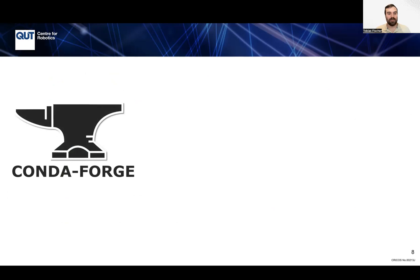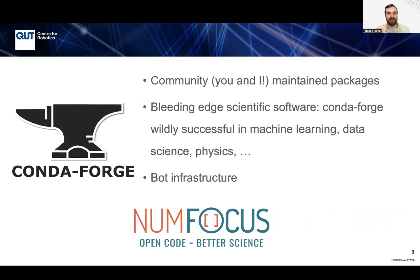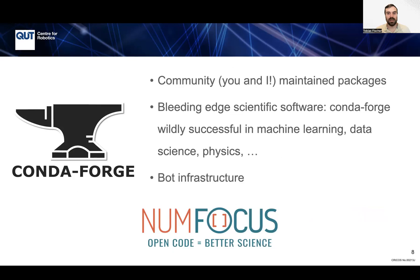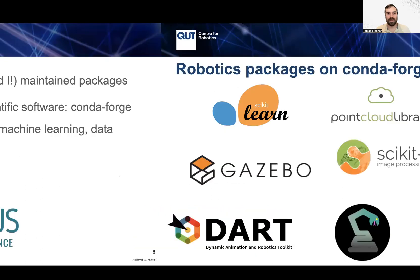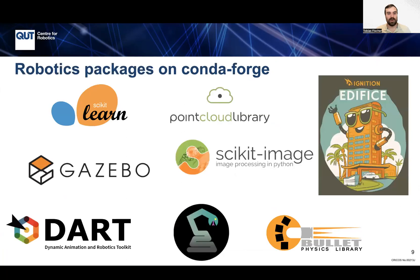In particular, we built on top of Conda Forge, a community-maintained package repository. You get bleeding-edge scientific software — it's widely successful in machine learning, data science, physics, and more. Bots do a lot of the work for you. There are also many robotics packages on Conda Forge, such as the Point Cloud library, scikit-image, Gazebo, DART, Bullet, and so on.